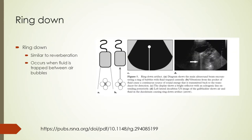A ring-down artifact is like a reverberation artifact. It occurs when fluid is trapped between a ring of air bubbles. The vibration from the fluid creates a continuous ultrasound wave transmitted back to the transducer and displayed as a line or series of bands posterior to the air bubble.